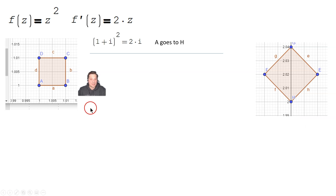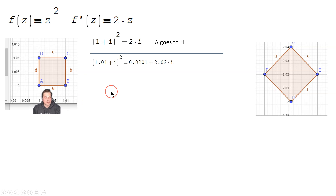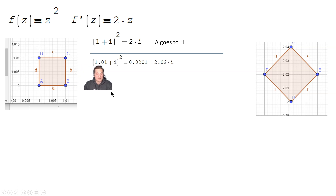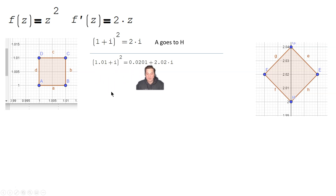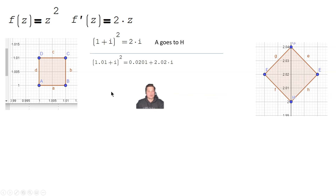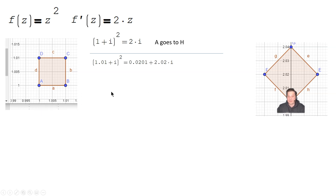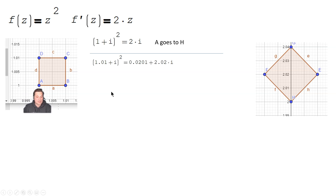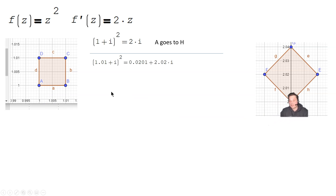Now take a look at the next stage. We can take a look at the image of point b. Point b in the complex plane has coordinates 1.01 plus i. When you square that, you get 0.0201 plus 2.02i. The image of that point on the right side is point e. Notice something has already happened — because of the way this function z squared acts, it's taking that little segment a, from a to b, and making it essentially into segment h. Segment h is clearly longer than segment a, and that segment from a to b has also been rotated.